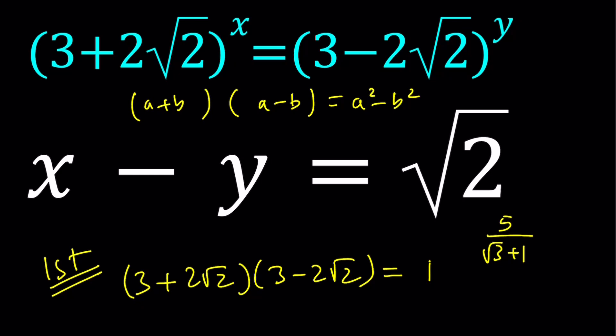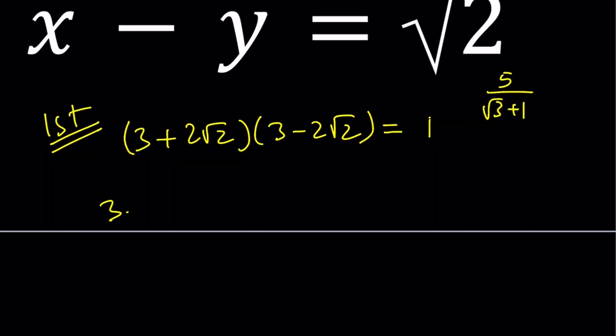So how do we use that information? Well, we can write one of them in terms of the other. Which one? That's totally up to you. I'm going to go ahead and use the first one, isolate the first one, which is 3+2√2, and write it as 1/(3-2√2).